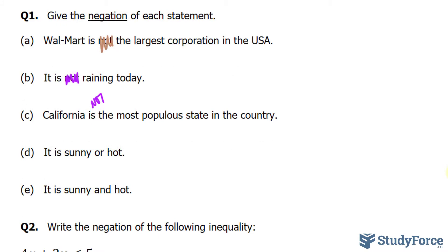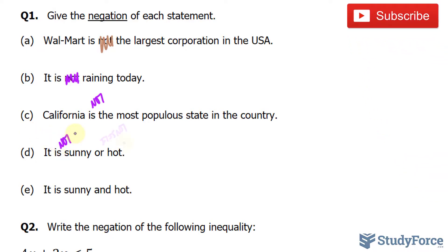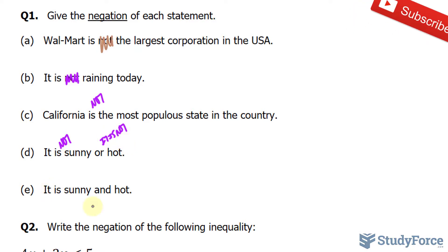For question D, the statement is: it is sunny or hot. To negate this, we have to say it is not sunny or it is not hot. The negation of the statement 'it is sunny and hot' becomes 'it is not sunny and it is not hot,' or equivalently, 'it is neither sunny nor hot.' It's up to you which one you want to report.